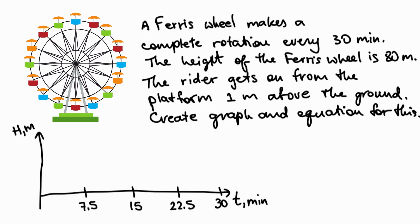The lowest point on the ferris wheel is one meter above the ground, and the highest point is 80 meters. The diameter is 79 meters, so dividing by 2 gives an amplitude of 39.5 meters — the radius of the ferris wheel is always the amplitude. The axis of the curve is located in the middle between the lowest and highest points: (80 + 1) ÷ 2 = 40.5 meters.